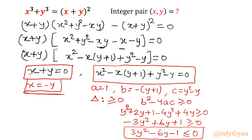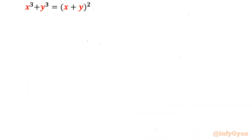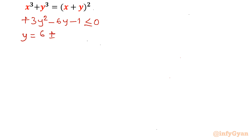Let us apply the quadratic formula to 3y² minus 6y minus 1 equals 0, where a equals 3, b equals minus 6, and c equals minus 1. So y equals (6 ± √(36 minus 12)) over 6, which equals (6 ± √48) over 6. Since √48 equals 4√3, this simplifies to (6 ± 4√3) over 6, or (3 ± 2√3) over 3.